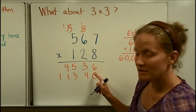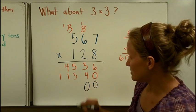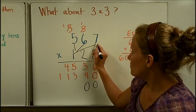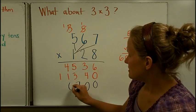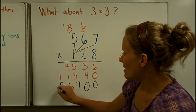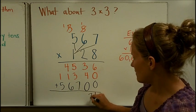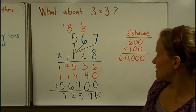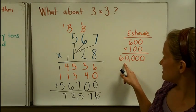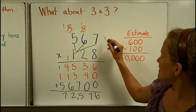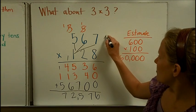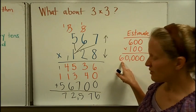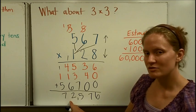So, instead of just one zero as a placeholder, I need two zeros as a placeholder. And then I would go through and multiply the hundreds times the ones, tens, and hundreds. So, 1 times 7 is 7. 1 times 6 is 6. 1 times 5 is 5. And then I would add. And I get 72,576, which looks pretty close to my 60,000 estimate. Notice that I rounded up here and I rounded down here. And the 60,000, when working with such large numbers, is still pretty close to 72,000.